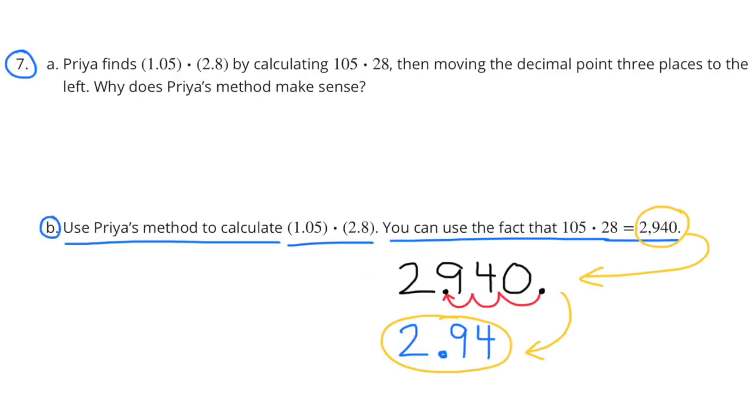Part b: Use Priya's method to calculate 1 and 5 hundredths times 2 and 8 tenths. You can use the fact that 105 times 28 equals 2,940. 2,940, I'm going to move the decimal point three places to the left like Priya did. And that gives me 2 and 94 hundredths, or 2 and 940 thousandths.